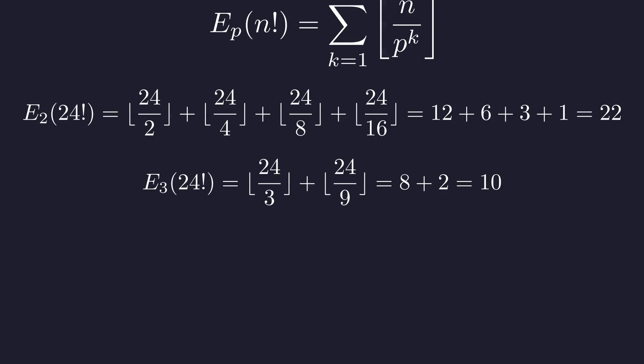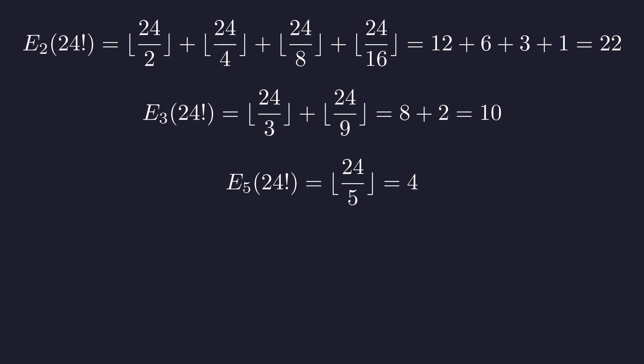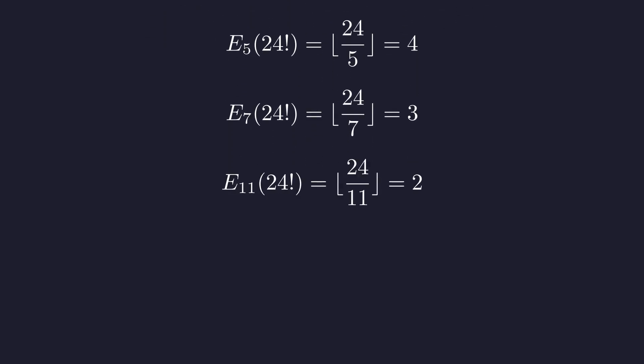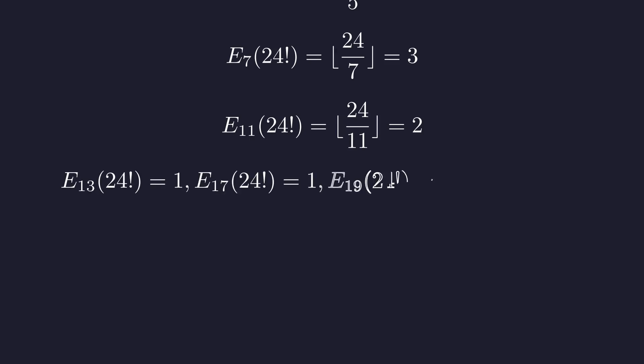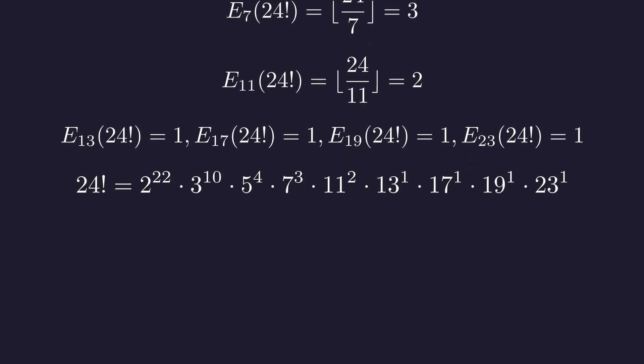For 3, we get 8 plus 2, so 10. 5 appears 4 times. 7 appears 3 times. 11 appears twice. And the larger primes, 13, 17, 19, and 23, each appear exactly once. Putting it all together, this is what 24 factorial looks like when we reveal its prime structure.